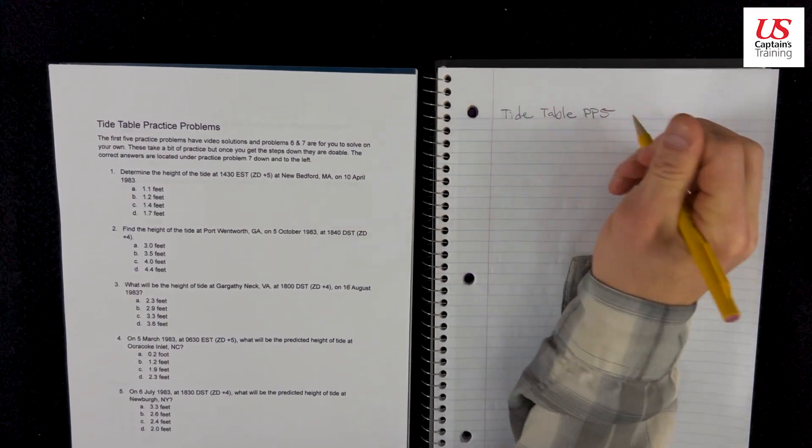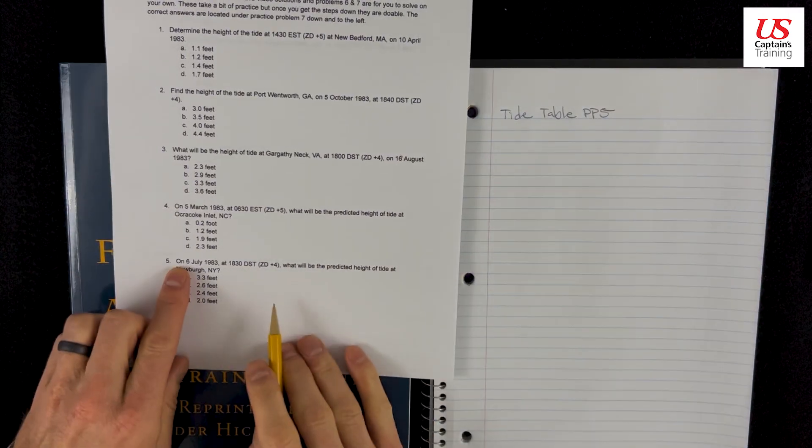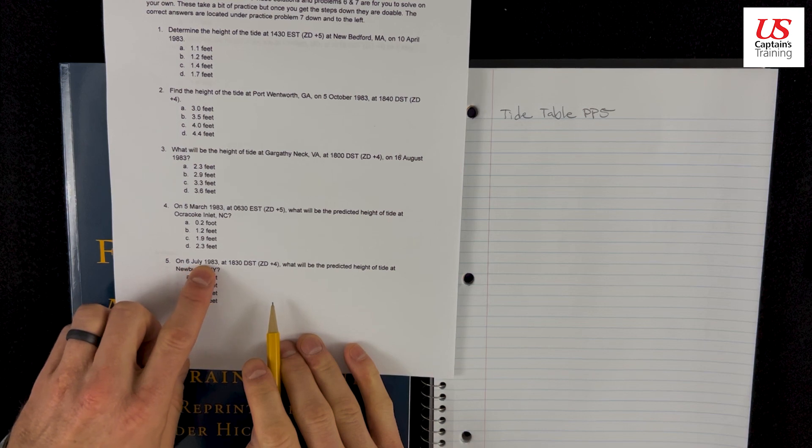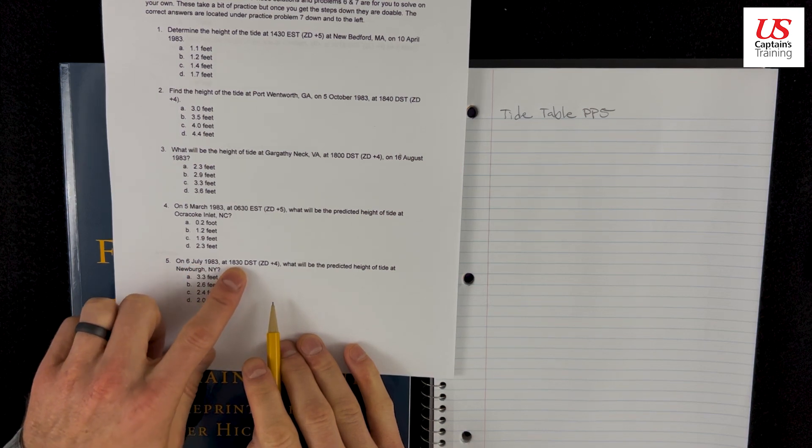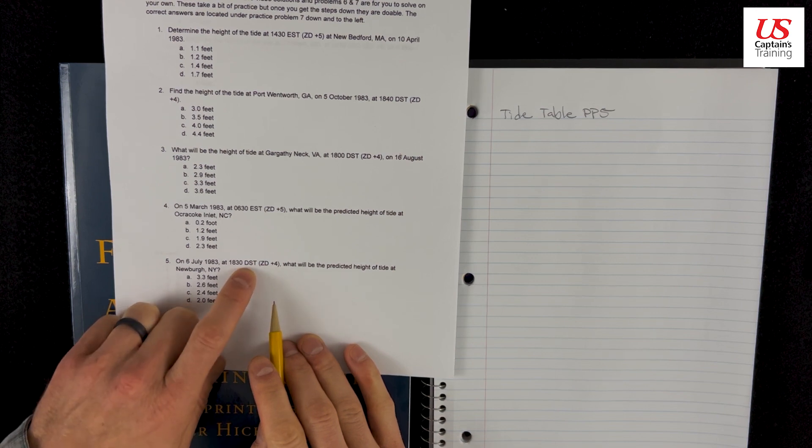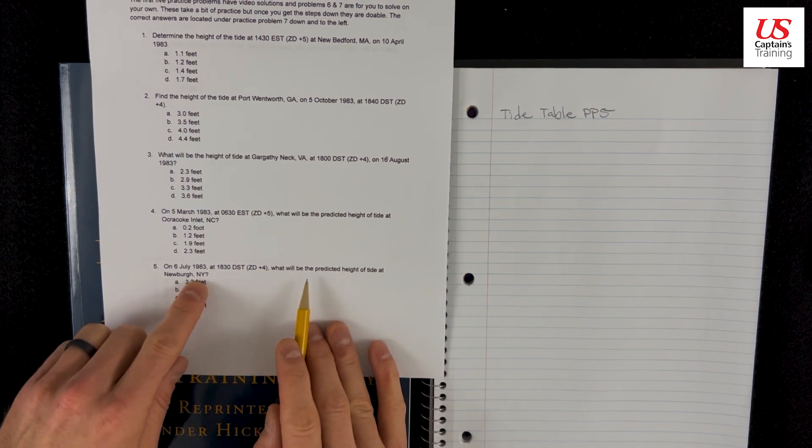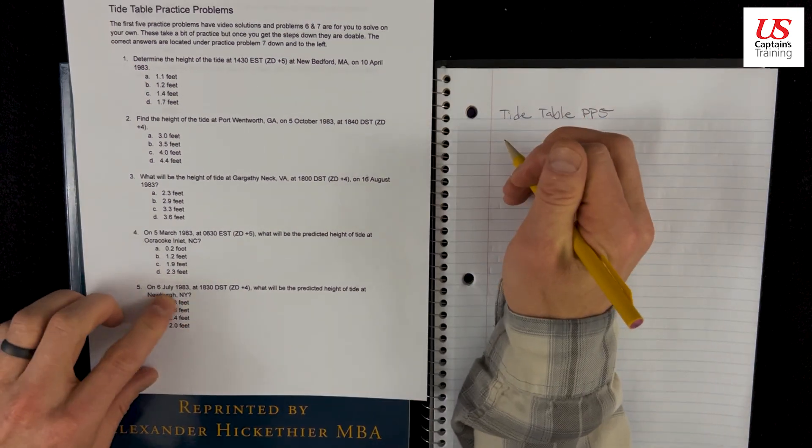Tide table practice problem five. Problem five reads on 6 July 1983 at 1830 DST, zone description plus four. This is daylight savings time. What will be the predicted height of tide at Newburgh, New York? Let's go.